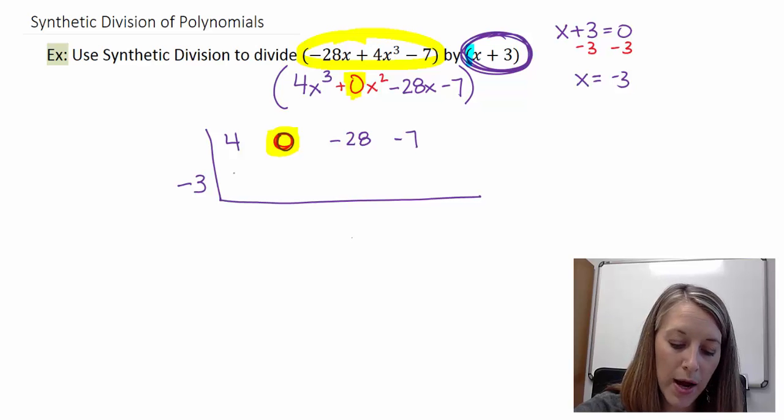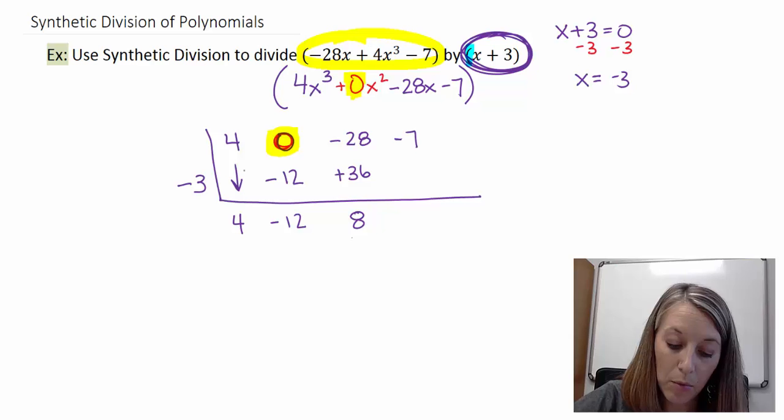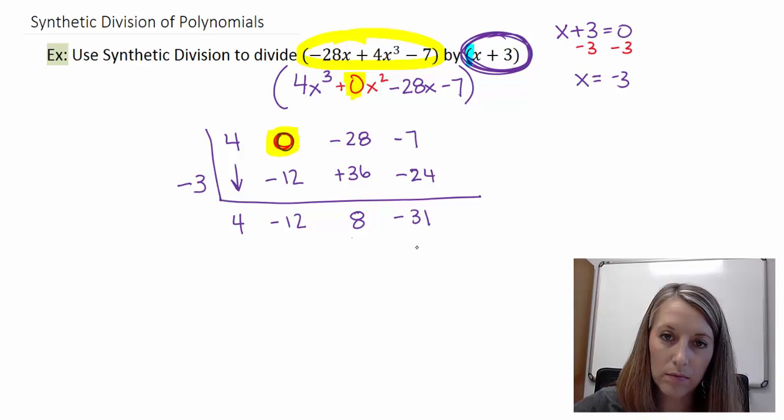Let me show you how quick this process can be. You bring down your first digit. You multiply. 4 times negative 3 gives me negative 12. I add. 0 plus negative 12 gives me negative 12. Multiply. Negative 12 times negative 3 gives me positive 36. I add. Negative 28 plus 36 gives me 8. I multiply. 8 times negative 3 gives me negative 24. And then I add. Negative 7 minus 24 gives me negative 31.